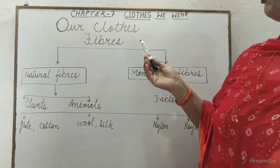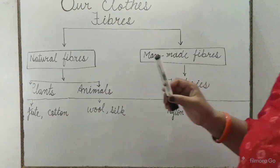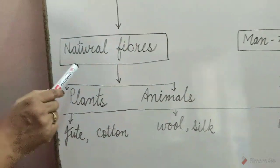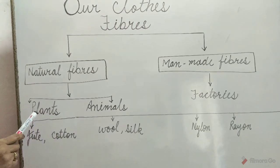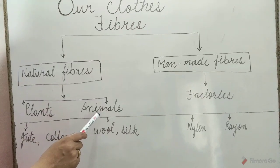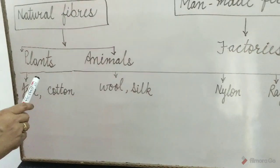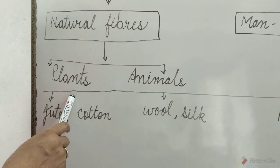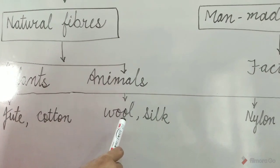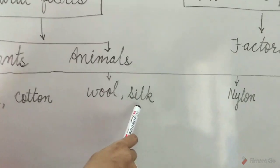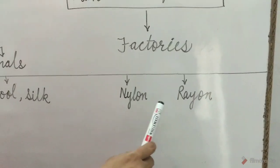Here is a flow chart which represents different kinds of fibers. Natural fibers come from plants and animals. Man-made fibers come from factories. Examples of plant fibers are jute and cotton. Examples of animal fibers are wool and silk. Examples of man-made fibers are nylon and rayon.